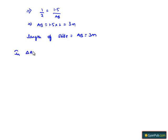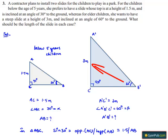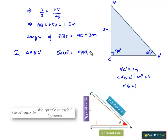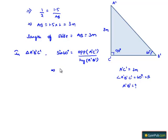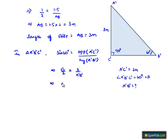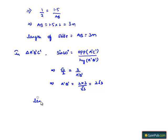Now, let us consider triangle A'B'C'. In this triangle, the opposite side is 3 meters and the included angle is 60 degrees, and we need to find the hypotenuse A'B'. We use the trigonometric ratio sine. Therefore, sin 60° = opposite side A'C' divided by hypotenuse A'B', that is √3/2 = 3 / A'B'. This implies A'B' = 2 × 3 / √3 = 2√3 meters. Therefore, the length of the slide for the elder children is 2√3 meters.